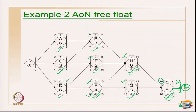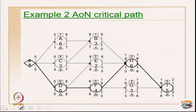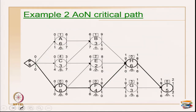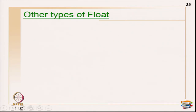The meaning of free float: for activity B, a free float of 1 means you can delay B by 1 day without affecting the early start of successor H. Total float of 1 for activity B means delaying B by 1 day will not delay the entire A-B-H-I path. That is why total float is called a path float and free float is called an activity float.